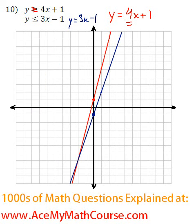And we also want the solution to be below 3x minus 1, or in fact, including that line, because y is less than or equal to 3x minus 1, so below the line.